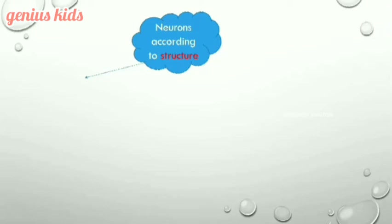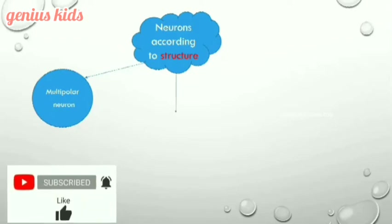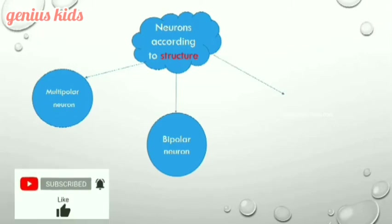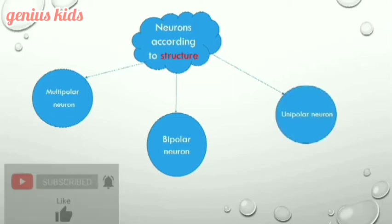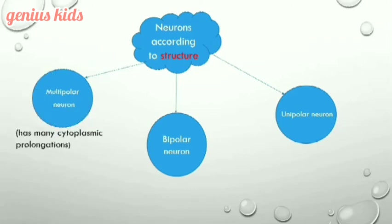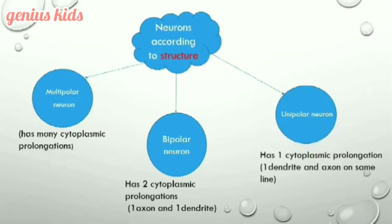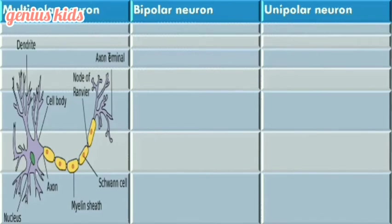If a neuron has many cytoplasmic prolongations, it is called a multipolar neuron. If it has only two cytoplasmic prolongations, it is called a bipolar neuron. Whereas if it has only one dendrite and axon on the same line, this structure is called a unipolar neuron. This is the shape of the multipolar neuron with its many cytoplasmic prolongations.